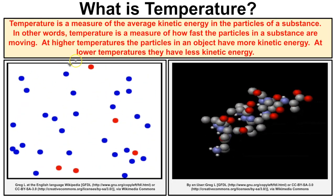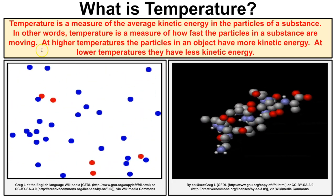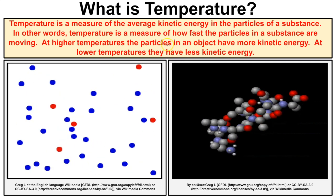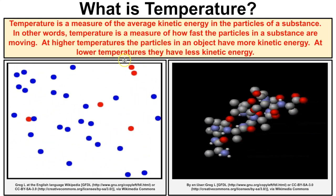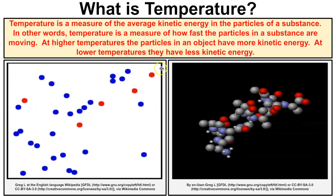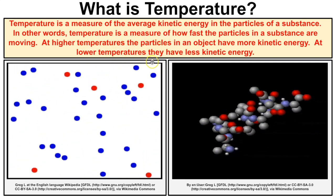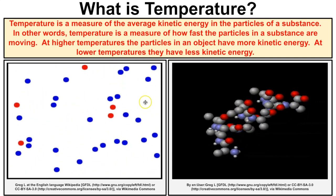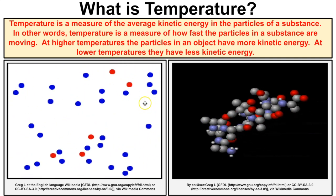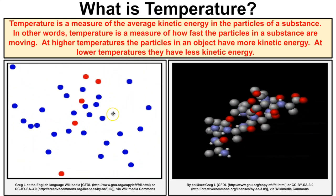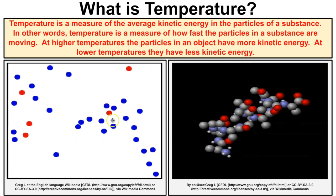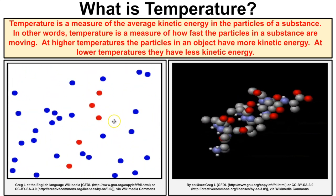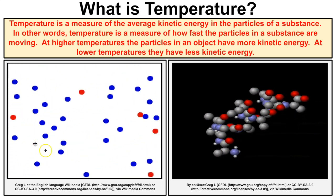So what is temperature? Temperature is a measure of the average kinetic energy in the particles of a substance. In other words, temperature is a measure of how fast the particles in a substance are moving. At higher temperatures the particles have more kinetic energy and move faster, and at lower temperatures those particles slow down and have less kinetic energy.